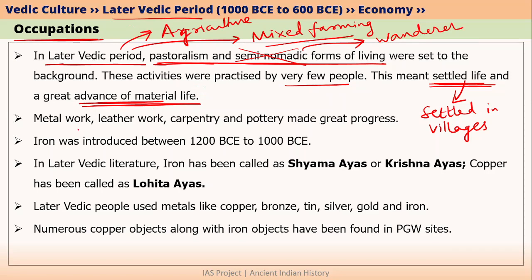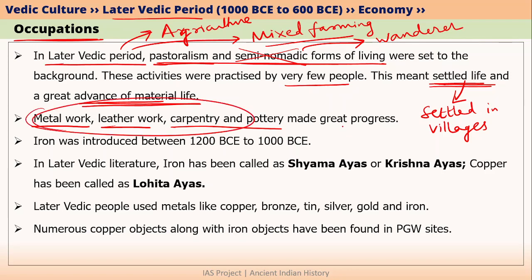Talking about some of the occupations, metal work was being done, leather work was being done, and carpentry and pottery were also being done in the later Vedic period. Moreover, all these activities saw great progress compared to the early Vedic period.